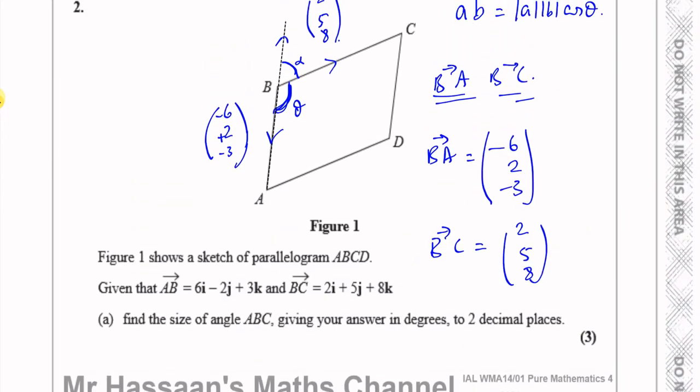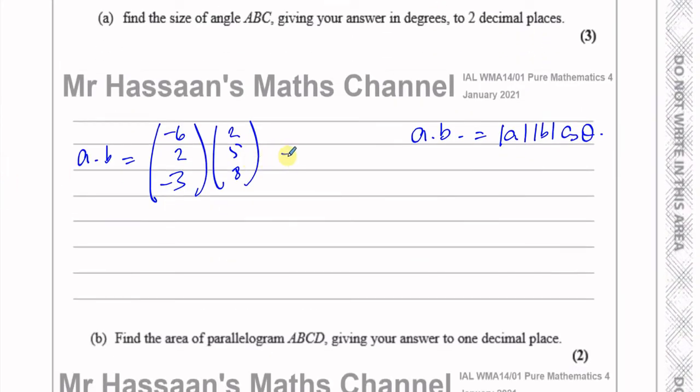Then I can find that dot product. When I multiply the i components, that gives me minus 12, add to that the product of the j components, that's 10, add to that the product of the k components, that's minus 24. So that's going to give me minus 12 minus 24, which is minus 36 plus 10, minus 26.